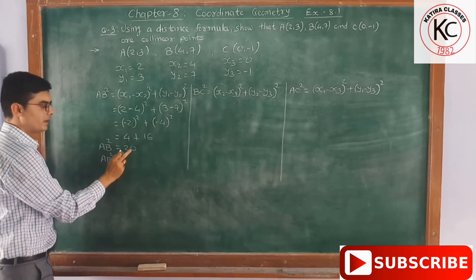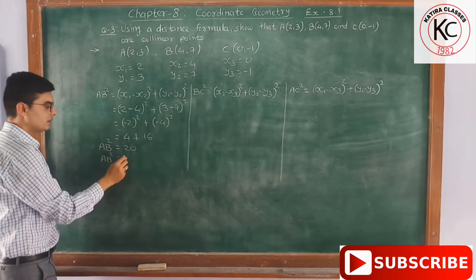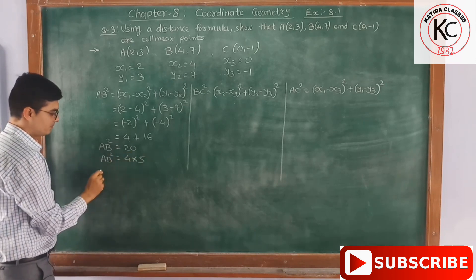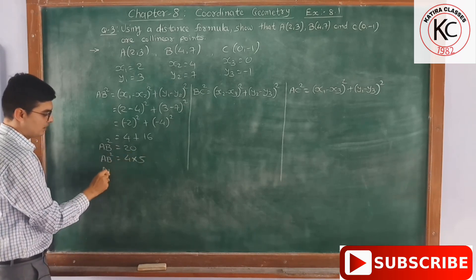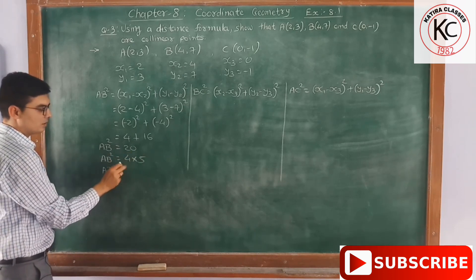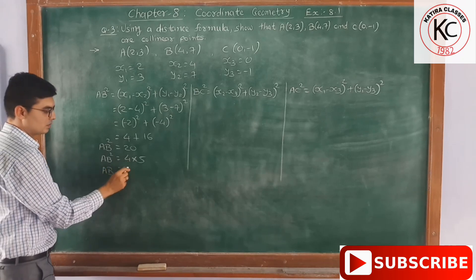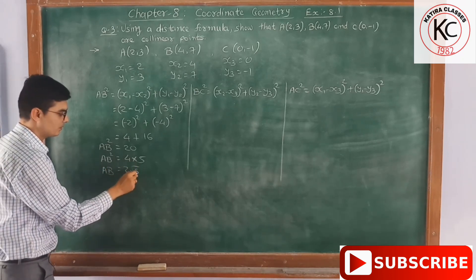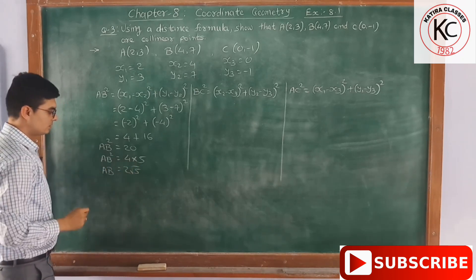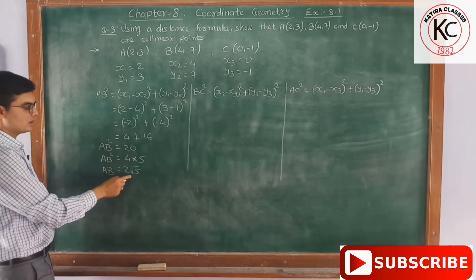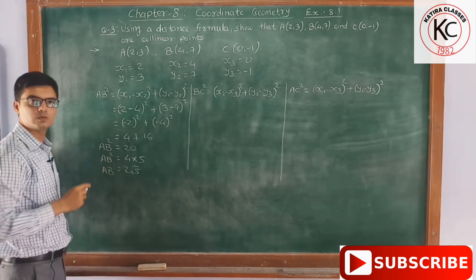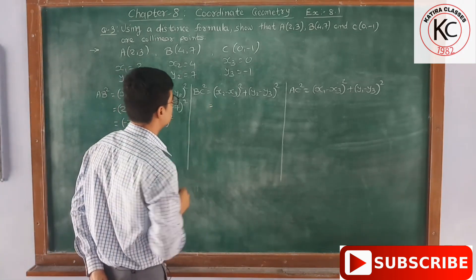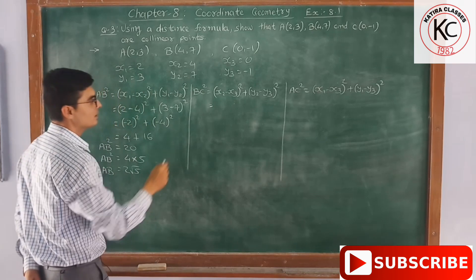We cannot directly find the root of 20, so we will factorize: 20 = 4 × 5. Root of 4 is 2 and root of 5 is √5, so AB = 2√5.